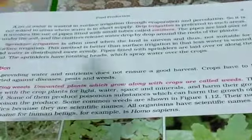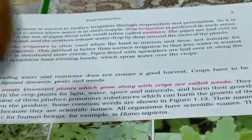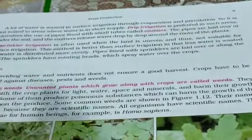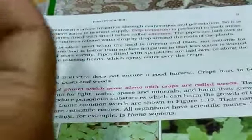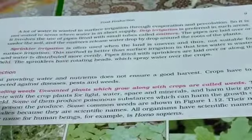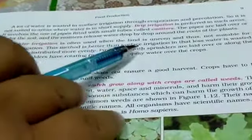Sprinkler irrigation is often used when the land is uneven and thus not suitable for surface irrigation. This method is better than surface irrigation — less water is wasted and water is distributed more evenly. Pipes fitted with sprinklers are laid along the field. The sprinklers have rotating heads which spray water over the crops, covering the entire field like a fountain.